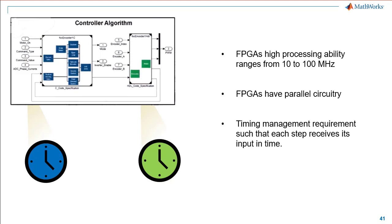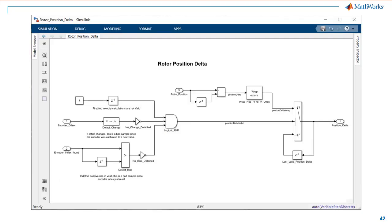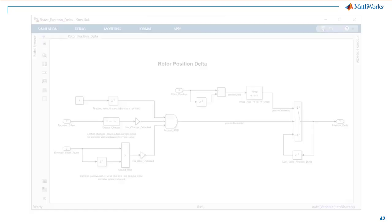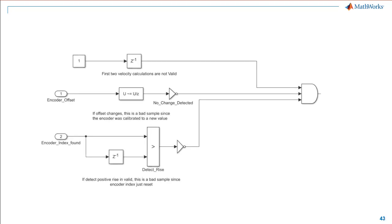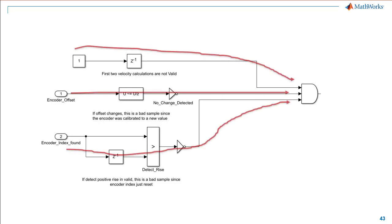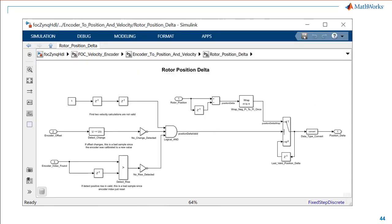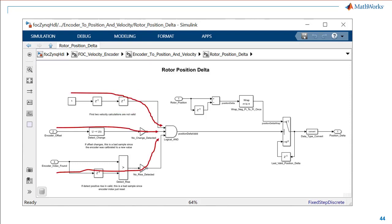We have now introduced very fast dynamics into the original model. FPGAs can run in the megahertz region and balancing the latency is crucial to propagate control signals through the hardware logic. HDL Coder inserts registers which ensure the signals through the parallel paths are coordinated, and this process is automated.